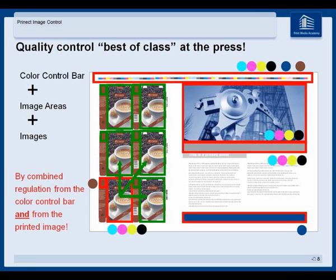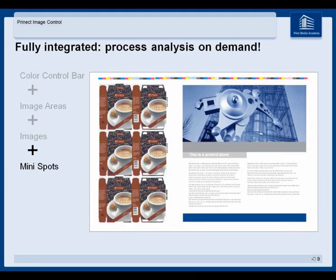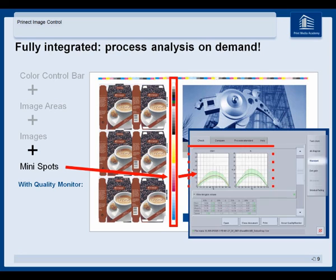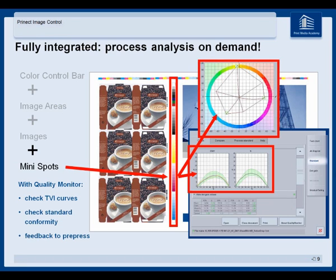But that's not the end of the story. We can also use mini spots and analyze them with the integrated quality monitor — for example, check the dot gain curves or check the color space to compare them with any kind of standards. If needed, feed it back to prepress online.